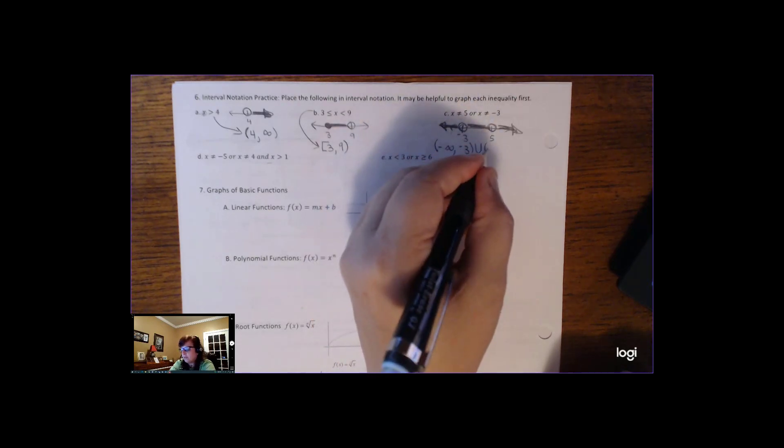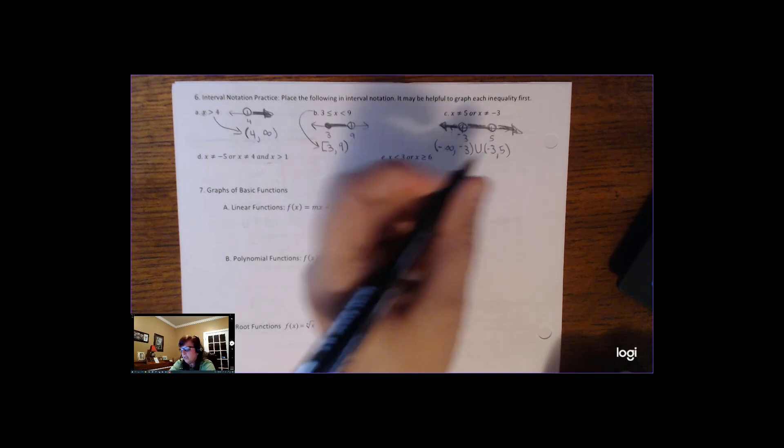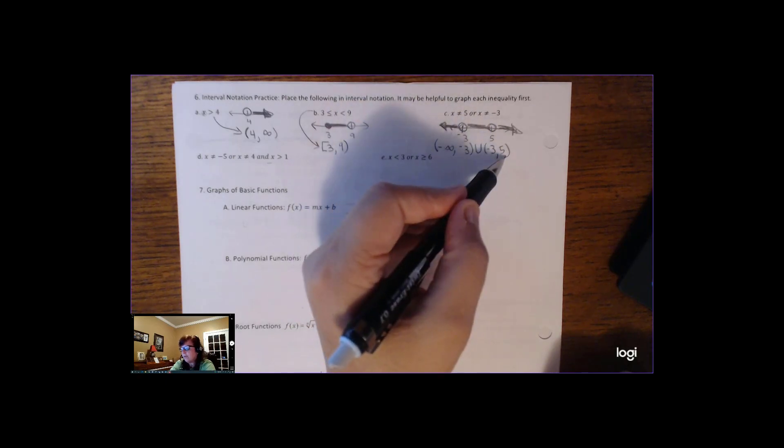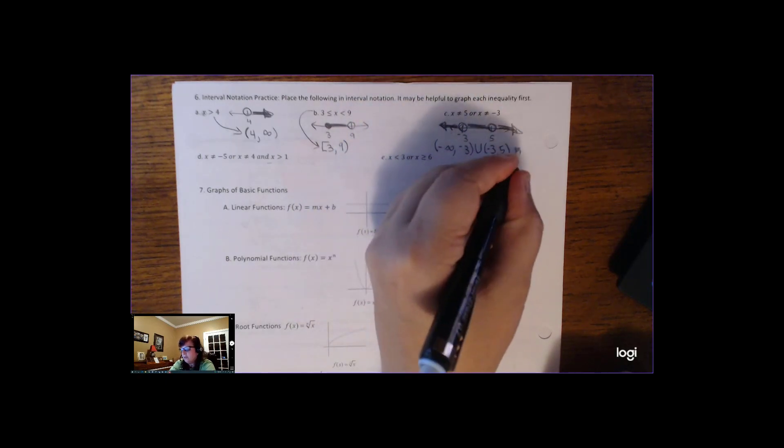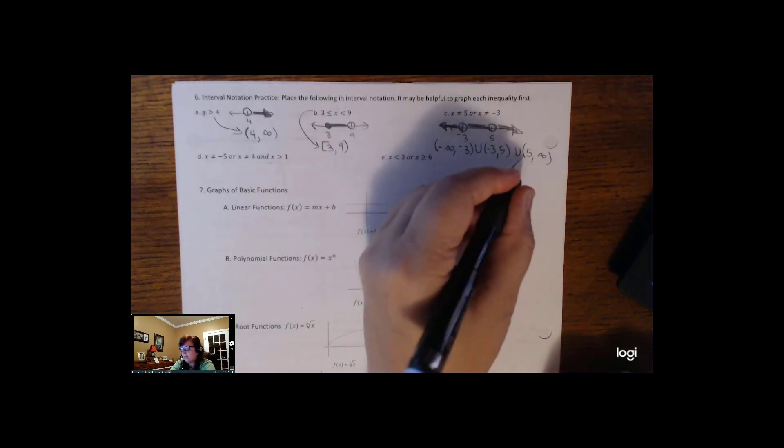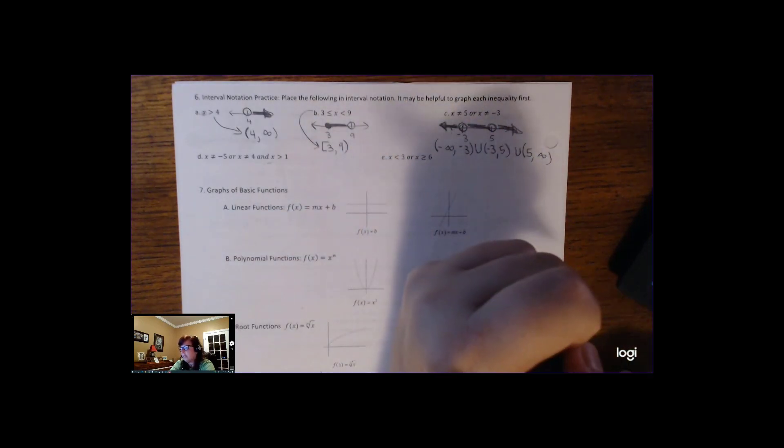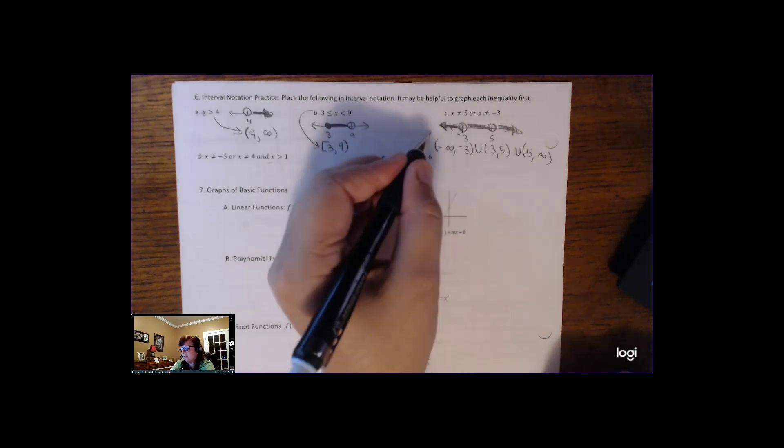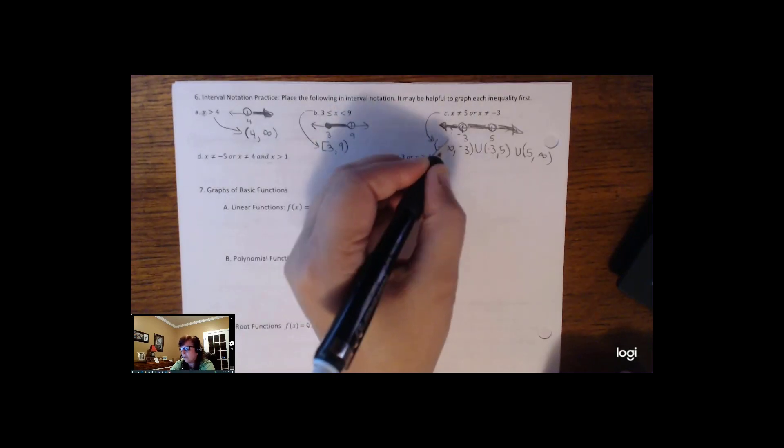And then all the numbers from negative 3 to 5, but we can't include negative 3 or 5. And then union, all the numbers from 5 to infinity, but we can't include 5. And of course we can't contain infinity. So this gets a little much, but you'll get used to it.